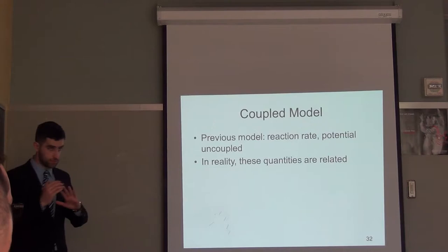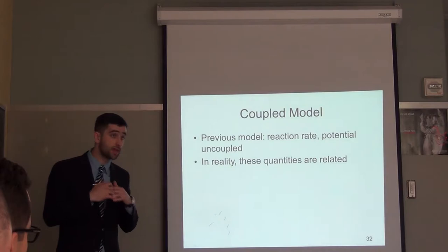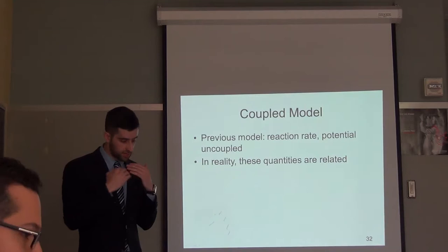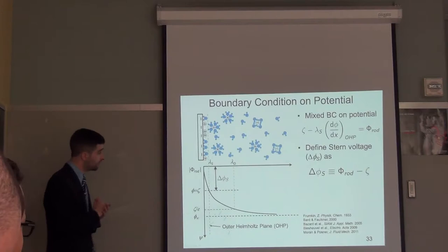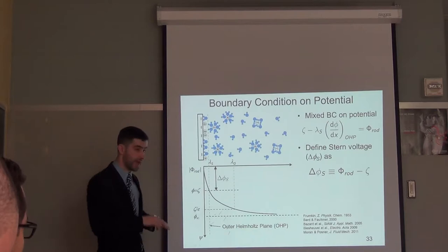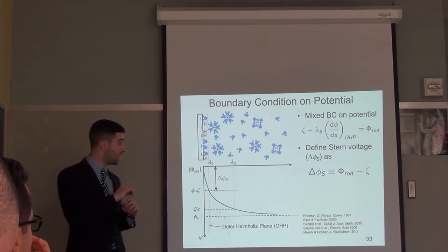Everything so far has been uncoupled — we've been choosing a flux and a zeta potential. However, the rod is in essence a short-circuited electrochemical cell, and electrochemistry theory says that the potential of a cell and the reaction rates are related to each other — in a sense they determine each other. To be a truly realistic model of the nanorods, we have to account for that coupling. We use the Gouy-Chapman-Stern model of the interface, consisting of a charged surface, a Stern layer of adsorbed immobile species, an outer Helmholtz plane, and a diffuse layer of solvated ions where ions opposing the surface charge are enriched and same-charge ions are depleted.